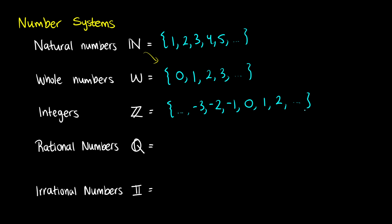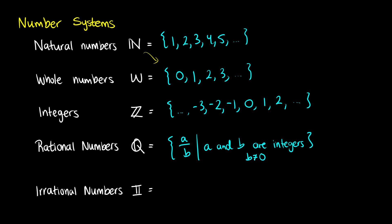The rational numbers is where we start to add in fractions or decimal points. You can have two numbers, say a and b, where the condition is that a and b are integers. You can take any two integers and put one on top of the other as long as b is not equal to zero, because you cannot have a fraction with a zero in the denominator. This just gives us our set of all fractions.